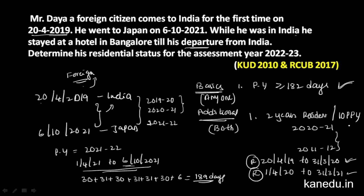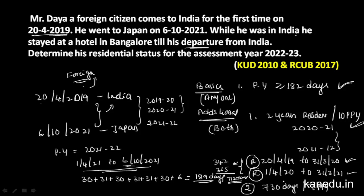For 2020-21, he stayed less than 182 days, so not resident. The first additional condition is fulfilled — he was resident for 7 years. For the second additional condition, he needs 730 days out of 7 preceding previous years. One year had 347 days, another full year 365 days, giving a total of 712 days. Since 712 days is less than the required 730 days, the second additional condition is not fulfilled.